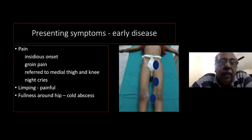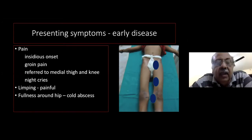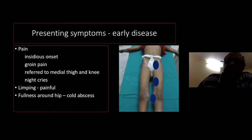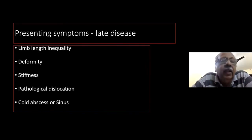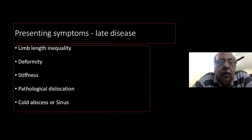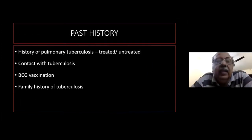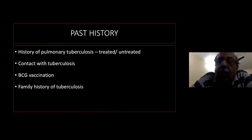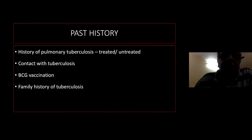Limping is painful in early stages and painless in late stages. There can be fullness around the hip joint due to cold abscesses. In late cases, patients may present with limb length inequality, deformity, stiffness, pathological dislocation, cold abscesses, or sinus. In the past history, ask for history of pulmonary tuberculosis (treated or untreated), contact with tuberculosis, history of BCG vaccination, and family history of tuberculosis.